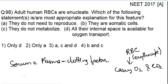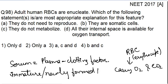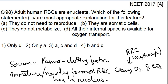Always remember, the immature or newly formed RBC has a nucleus. If you are asked whether the RBC does not have a nucleus in its whole lifespan, that statement is wrong. Because the RBC contains a nucleus when it is immature or newly formed. When it gets mature, the adult human RBCs are enucleate — they lack the nucleus.